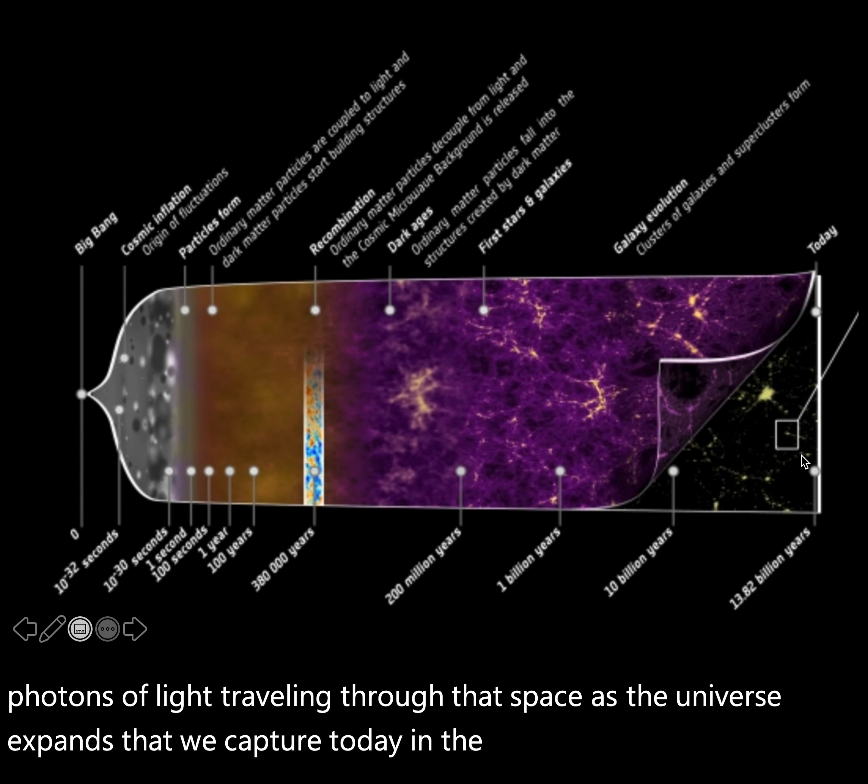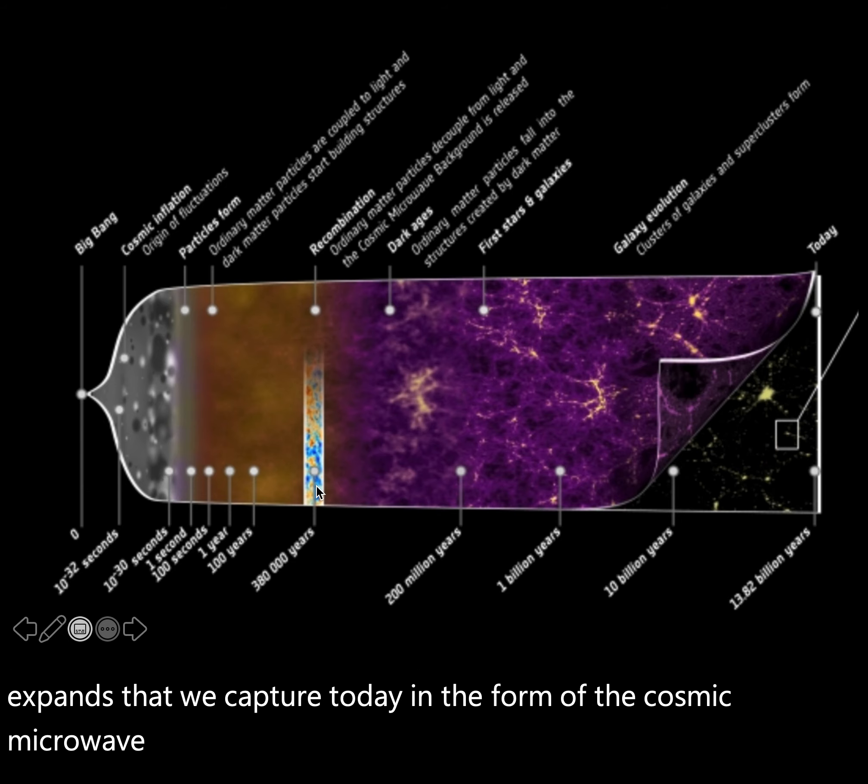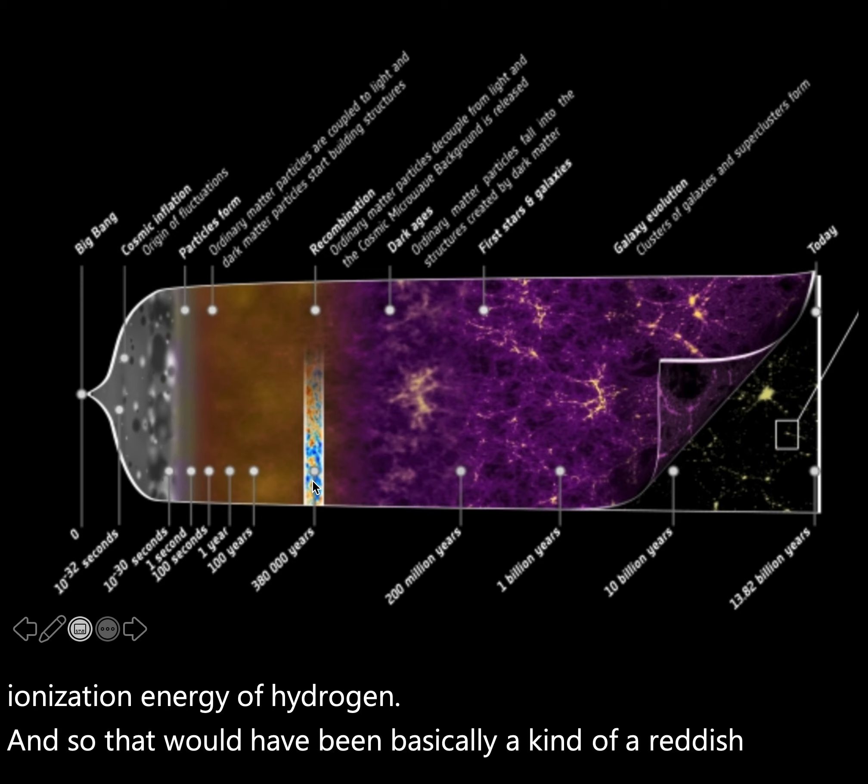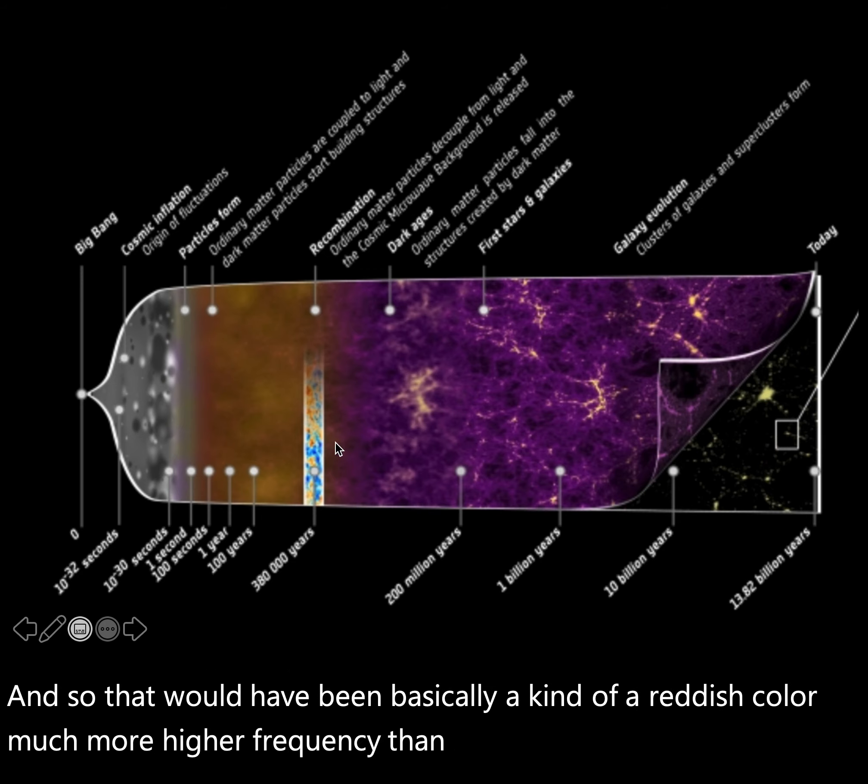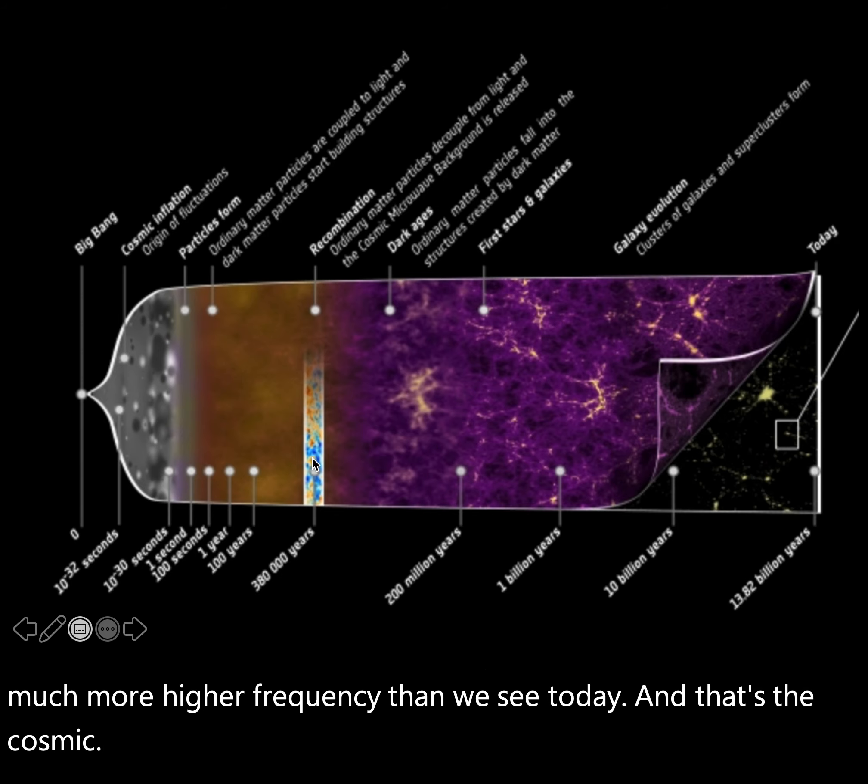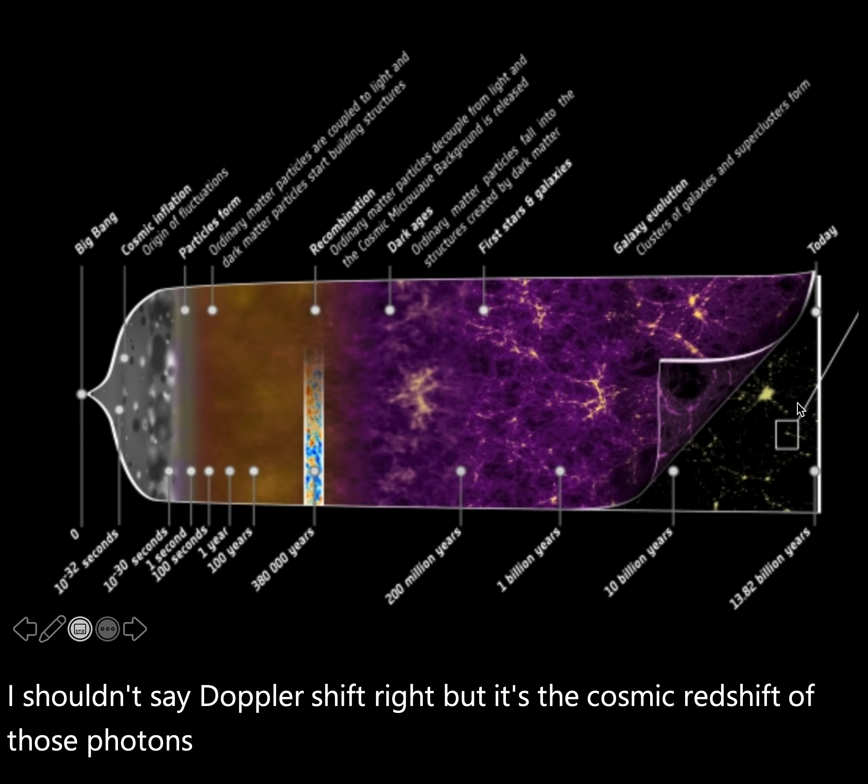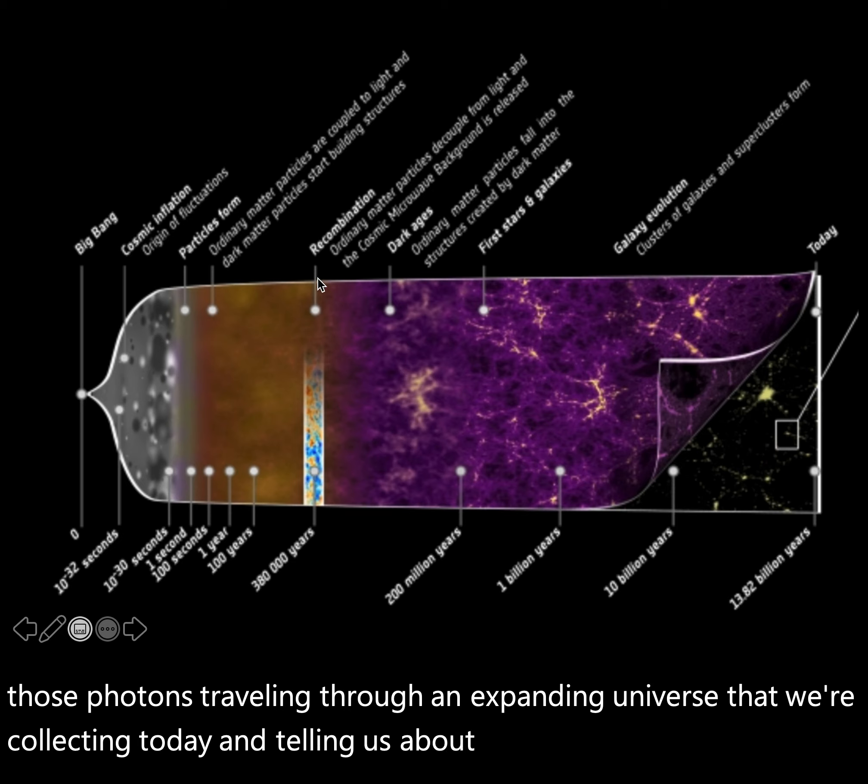And so it is at this point, 400,000 years after the Big Bang, that space becomes mostly empty. That's because the electrons have been captured by their respective hydrogen and helium and trace amounts of lithium nuclei. The matter is mostly neutral, and there's empty space, and so the light actually is traveling through that space. And it is those photons of light traveling through that space as the universe expands that we capture today in the form of the cosmic microwave background. That light is actually the ionization energy of hydrogen, which would have been basically a reddish color, much higher frequency than we see today. It's the cosmic redshift of those photons traveling through an expanding universe that we're collecting today.